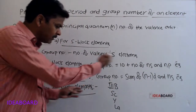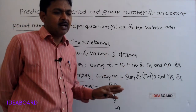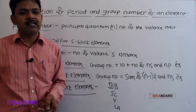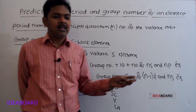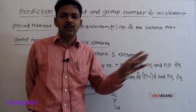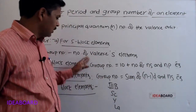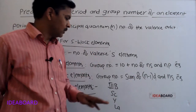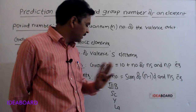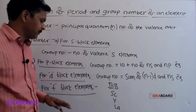So for f block elements, no need to apply any formula. Directly we can tell the answer — all f block elements belong to the third B group only.